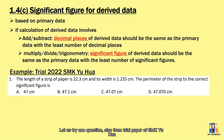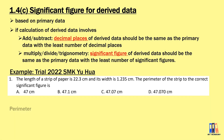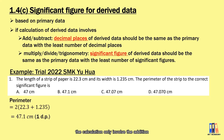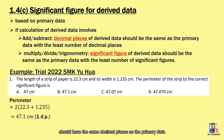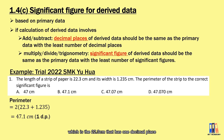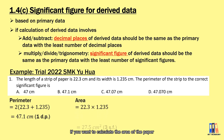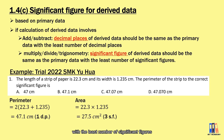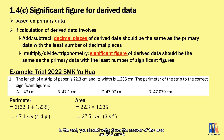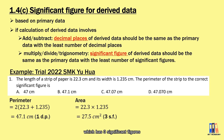Let us try one question from the trial paper of SMK UR in 2022. We are given the length and width of a strip of paper. To calculate the perimeter, which only involves addition, the final value should have the same decimal places as the primary data with the least decimal places — that is 22.3 cm, which has one decimal place. So the perimeter equals 47.1 cm. To calculate the area, the significant figures should match the primary data with the least significant figures, which is the length with three significant figures. Therefore, we write the area as 27.5 cm², which has three significant figures.